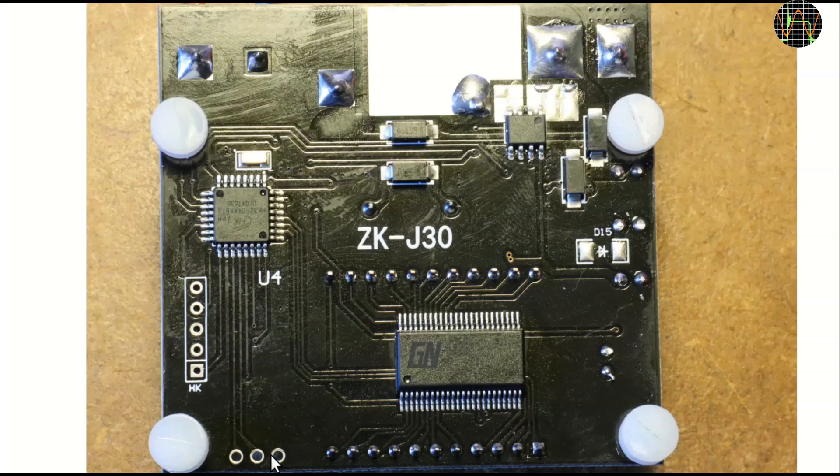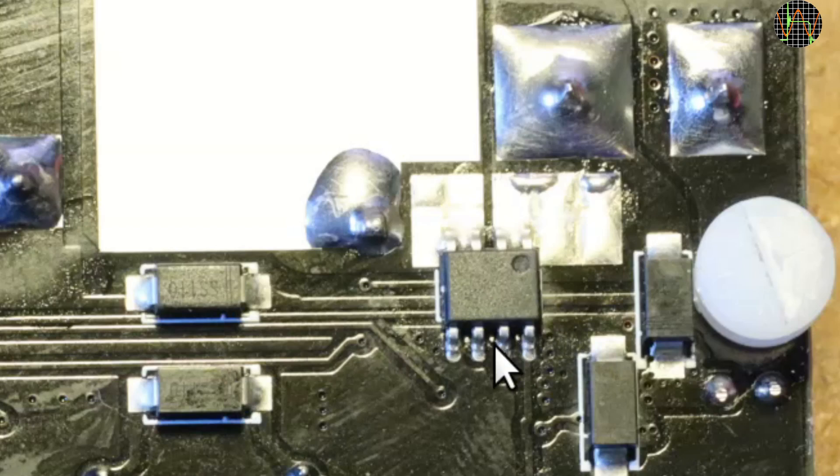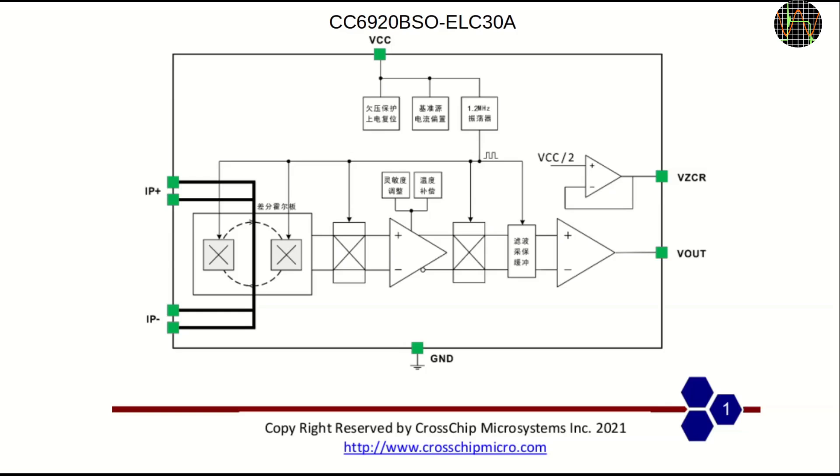Otherwise, we have a couple of beefy diodes and the current sensor, which is a CC6920BSOELC30A. It sits right between the battery and the load terminals and those doubled-up pins obviously are meant to carry the current. Again, the only datasheet I managed to find is in Chinese, but it is clear that this is a Hall-Effect current sensor. The current just flows through the chip on a beefy track. This means there is practically no voltage drop as with the usual current shunts.